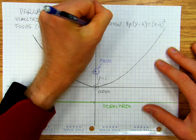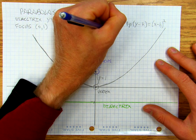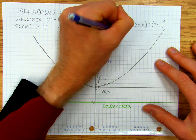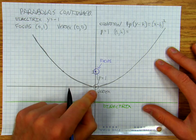and I've got this equation 4p(y - k) equals (x - h) squared. And in this case, p is equal to 1, and then h, k, which is the vertex,